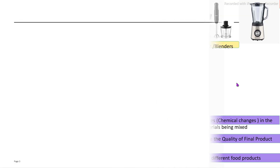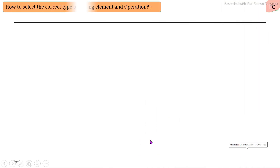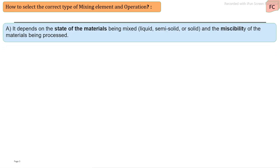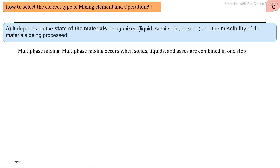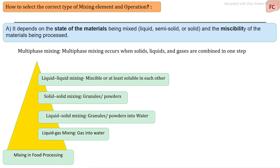To select the correct type of mixing element and operation, the main parameters to consider are: the raw material's initial viscosity, the state of the material, and its mixability. These three points are the main raw material properties to consider. The state of the material may be liquid, semi-solid, or solid.